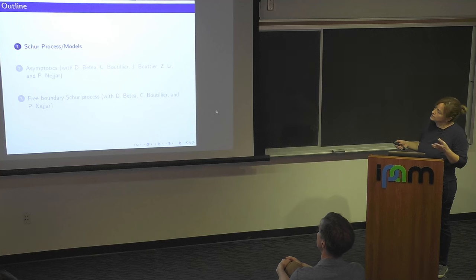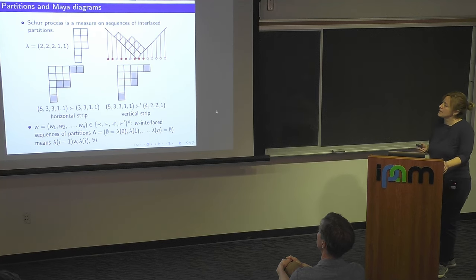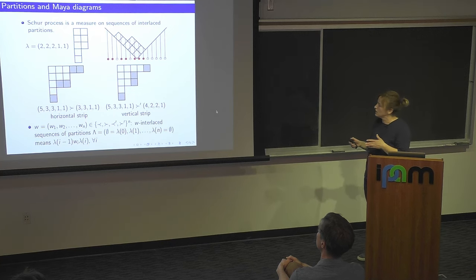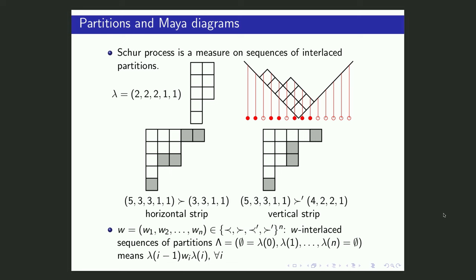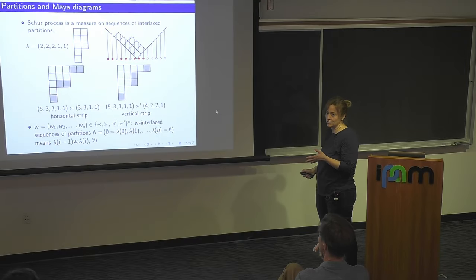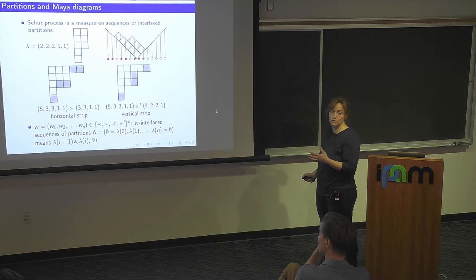The Schur process is a measure on sequences of partitions. We have different ways to write a partition: either as a Young diagram or as a particle-hole configuration known as a Maya diagram. For the Schur process, we need the sequence of partitions to interlace. When we superpose two partitions and they differ by a strip — either a horizontal strip or a vertical strip — we say they interlace. Sometimes people refer to the vertical strip case as a dual interlacing.